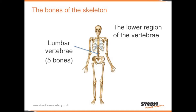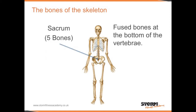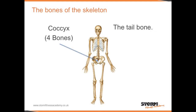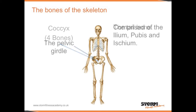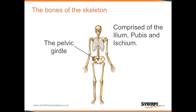The lower region of the vertebrae is the lumbar vertebrae, which has 5 bones. At the bottom of the vertebrae are 5 fused bones which form the sacrum. Below the sacrum is the tailbone, also known as the coccyx, which has 4 fused bones. The pelvic girdle is comprised of the ilium, the pubis, and the ischium.